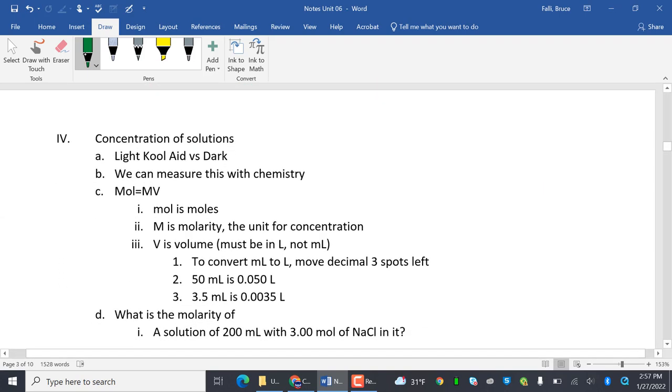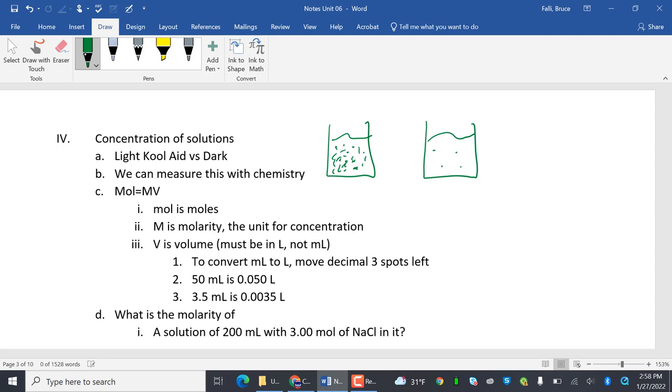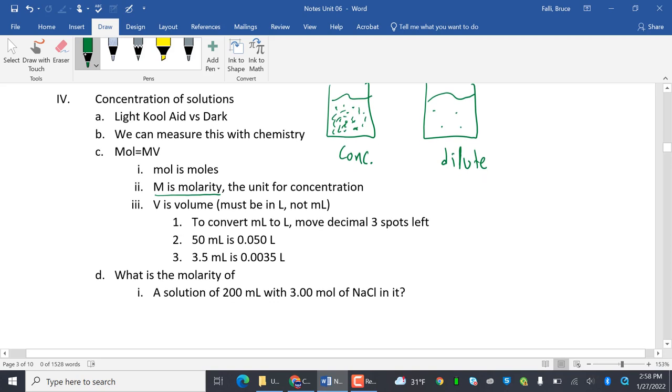Concentration of solutions. Light Kool-Aid versus dark Kool-Aid. So concentration means how much junk you got in it. If I have it concentrated, it'll have a lot of dots. This is concentrated. This is dilute. And we want to be able to measure this with a real number. So the way we're going to measure this is with molarity. Moles equals molarity times volume. Mole is moles. Big M is molarity, the unit for concentration. And V is volume. It must be in liters, not milliliters. So to convert to liters, we have to consistently move it three spots to the left. So if I got 50 milliliters, I got one, two, three, doink. 3.5, one, two, three, doink, 0.0035.